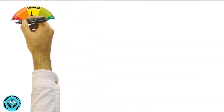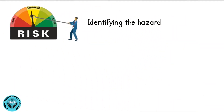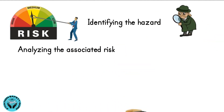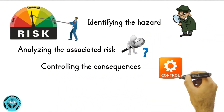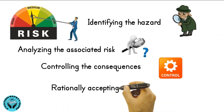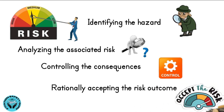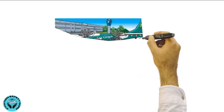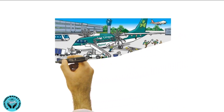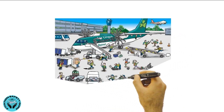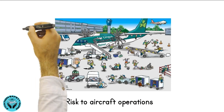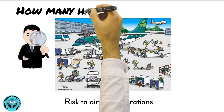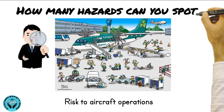Risk Management is a process of identifying the hazard, analyzing the associated risk, and controlling the consequences, or rationally accepting the risk outcome. An aircraft apron on an airport has numerous hazards which pose risk to aircraft operations. Look around and see how many hazards you can spot.